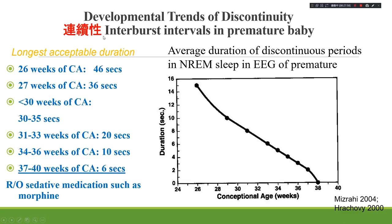The interburst interval gradually decreases as infants mature. For reference: at 26 weeks conceptional age, the upper limit of interburst interval can be 46 seconds; by 37 to 40 weeks, the upper limit drops to 6 seconds. Caution is needed regarding sedative medications — for example, cooling babies undergoing hypothermic therapy sometimes receive morphine, which prolongs the interburst interval beyond natural sleep values.